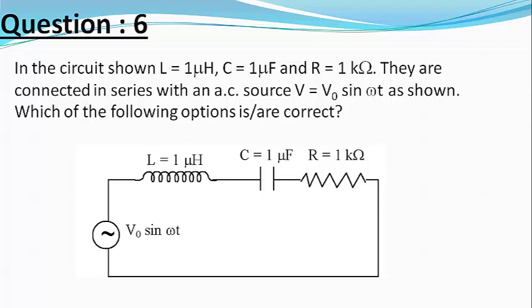Let me explain the diagram to my visually impaired students. It's a very simple diagram in which an AC supply, an inductor, a capacitor and the resistor are placed in series to each other.